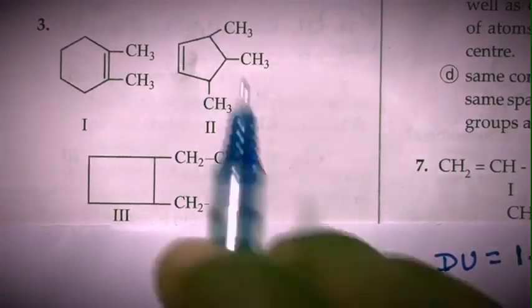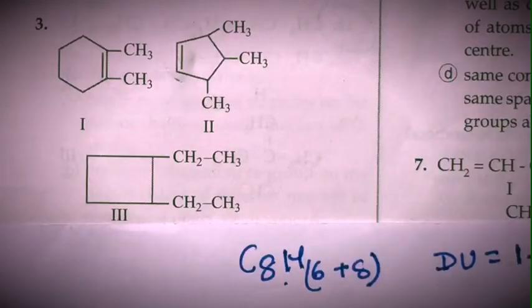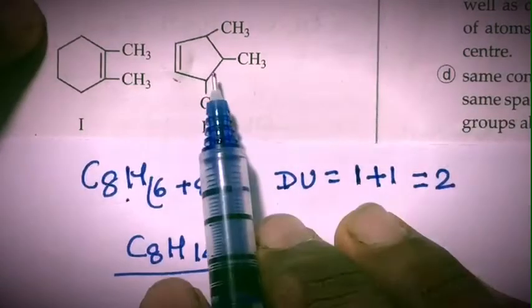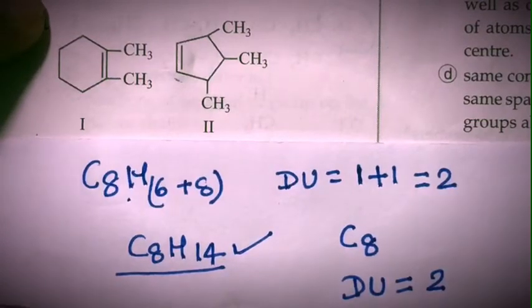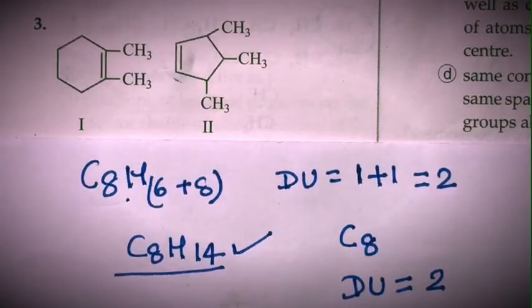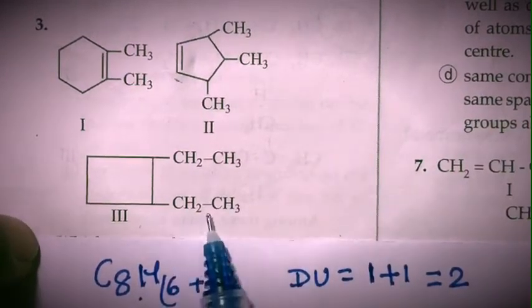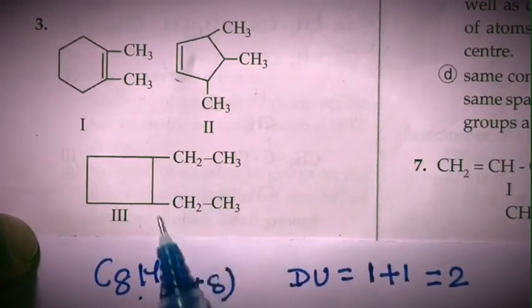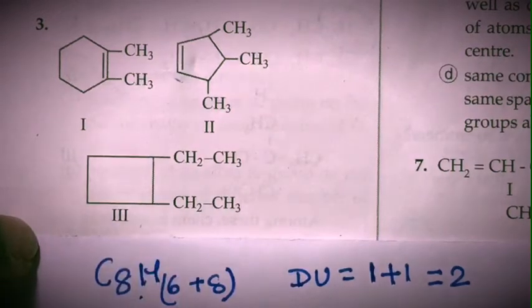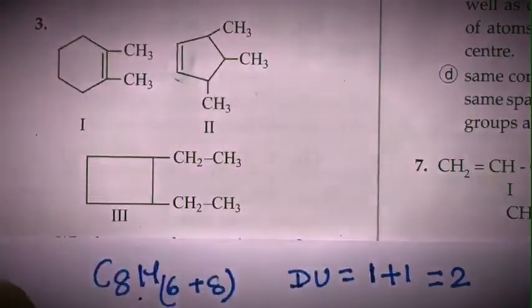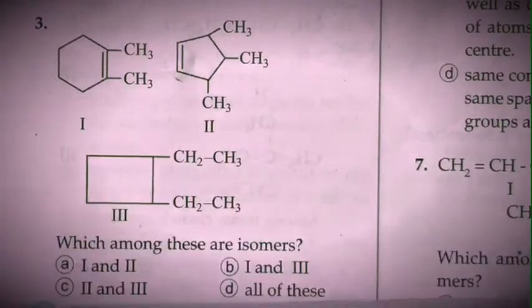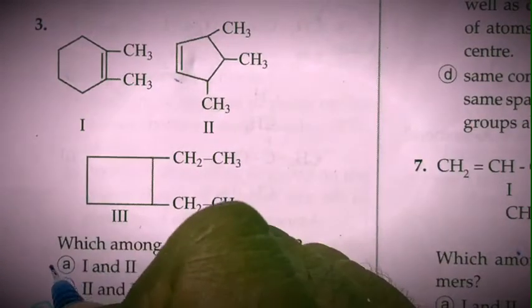So in both 1 and 2, the number of carbon atoms is the same and DU is also the same, so 1 and 2 are isomers of each other. Now let's check the third option. The number of carbon atoms is also 8 — 4 in the ring and 4 in the ethyl substituent — but the degree of unsaturation is only 1 because there is only 1 ring and no pi bond. So the number of hydrogens will be higher than in 1 and 2. Therefore, only 1 and 2 are isomers in this case, and the correct answer is A.